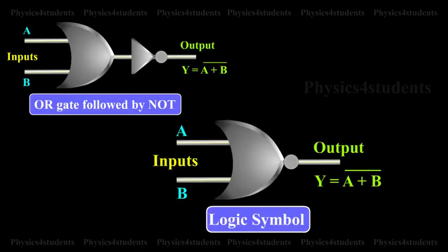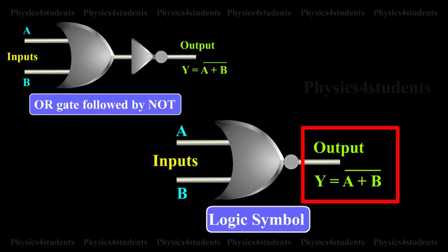The logic symbol for NOR gate is given in the animation. The boolean expression to represent NOR gate is y is equal to a or b, the whole complement.